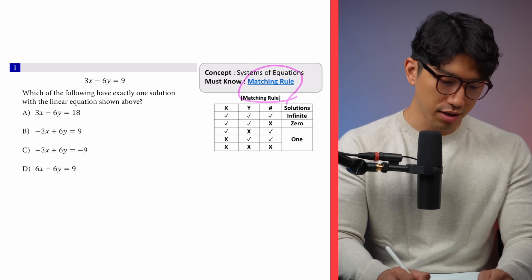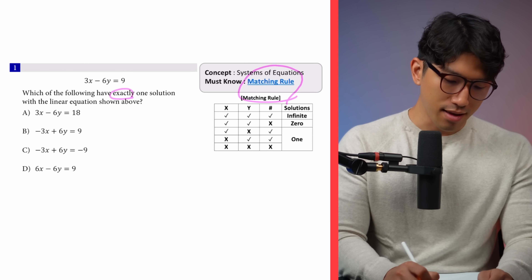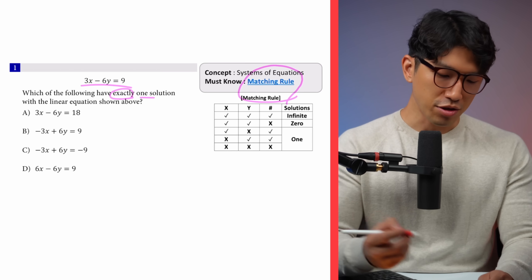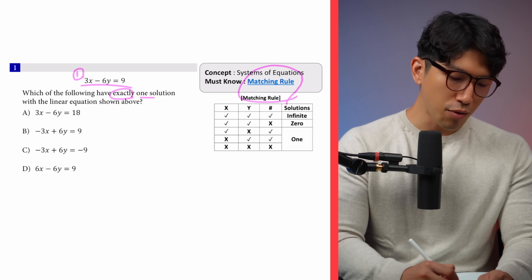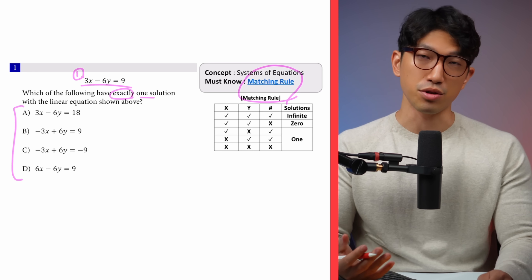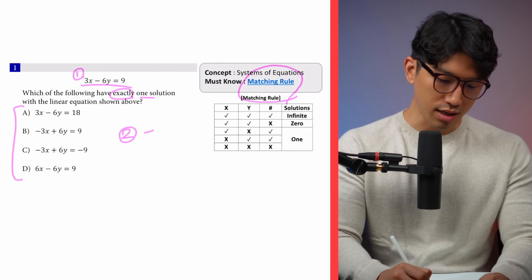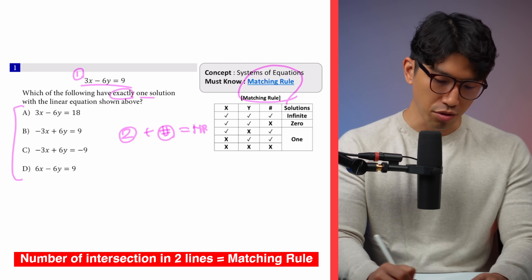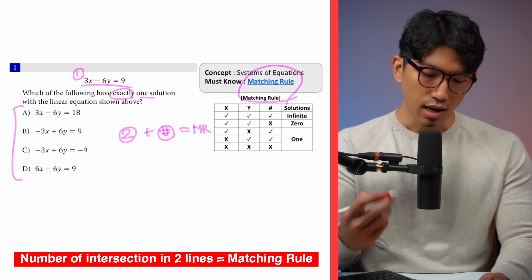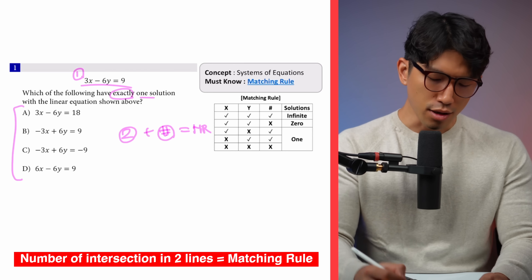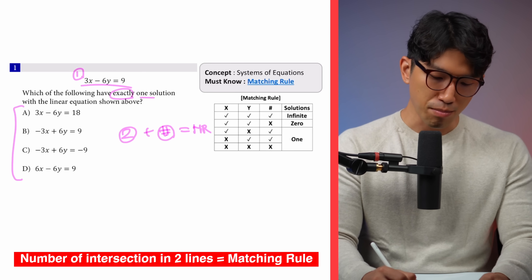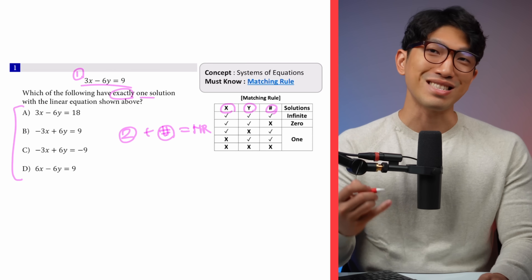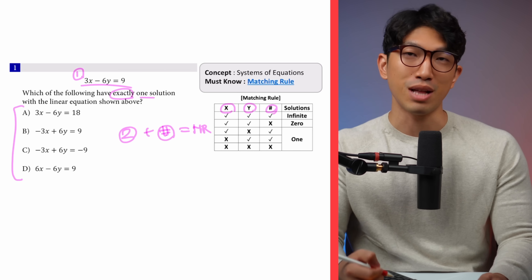The first question asks which of the following have exactly one solution with the linear equation shown above. We know that we're working with one linear equation and then two linear equations. When it comes to two lines and the number of intersections, you have to use what's known as the matching rule. By looking at the relationship between x, y, and the number for the two equations, you can figure out exactly how many solutions these two lines will have.